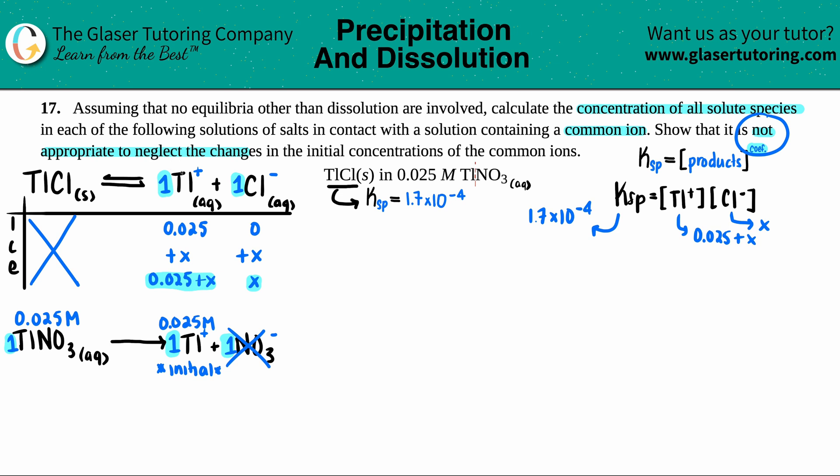I have Tl of 0.025 + x and the Cl is x. Now here comes the problem—it's already setting us up that it's not acceptable to neglect the changes, meaning we have to keep this +x in this problem. Last question we were assuming that this change was so small it didn't budge the number. If we quickly plugged in the values for Ksp and plugged in 0.025 for x, 1.7×10⁻⁴ = 0.025 × x.